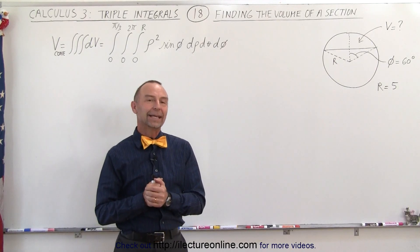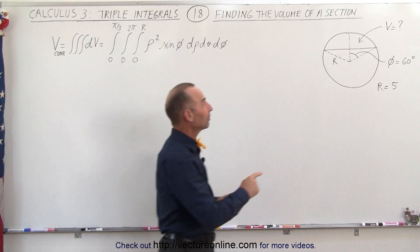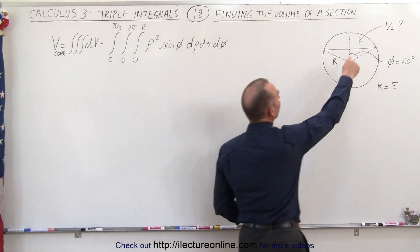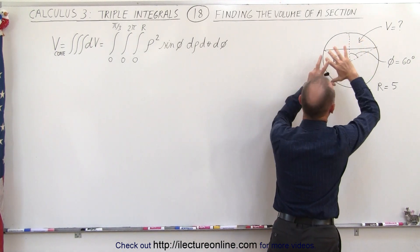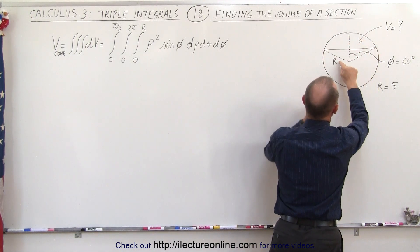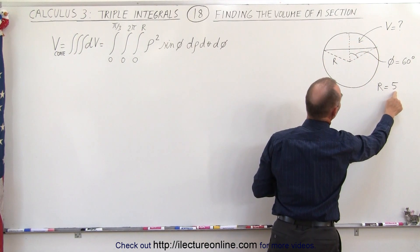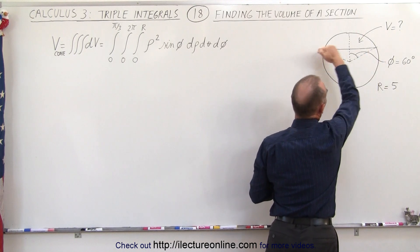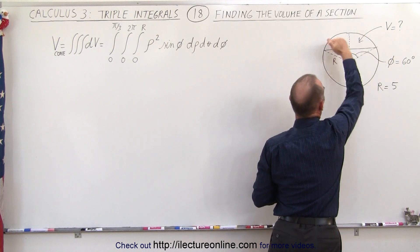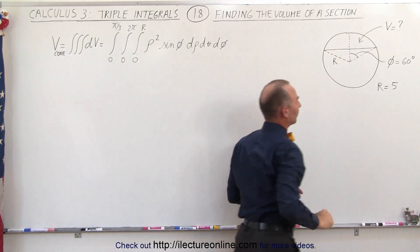Welcome to ElectronerLine. In this example, we're going to try to find the volume of a segment of the sphere. This is the sphere of radius R. The radius is 5, and we're going to cut off a section. We want to know what the volume is of that top section.